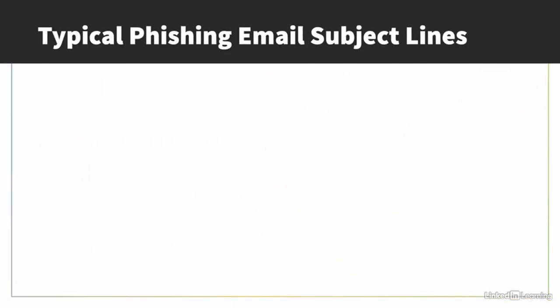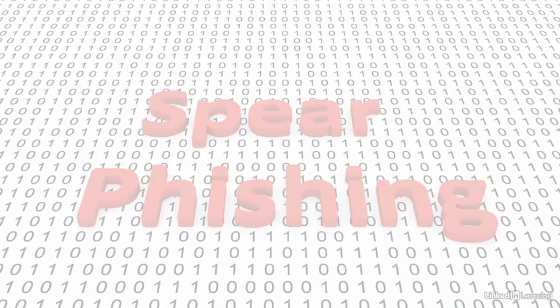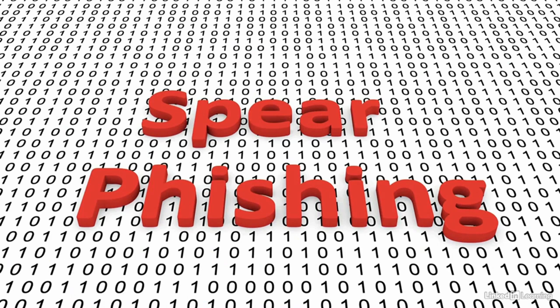Phishing email subject lines often have a certain style. Examples of typical subject lines include: 'Your account will be locked,' 'Important — please log in to your account to verify your info,' and 'Invoice due.' Note how they sound urgent or at least important enough to not ignore. Spear phishing is a variety of phishing that customizes email attacks to specific users, hoping the illusion of familiarity will create more trust.